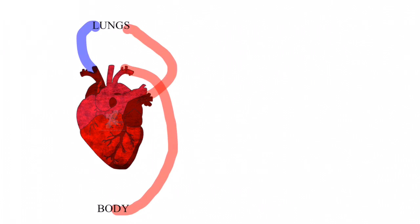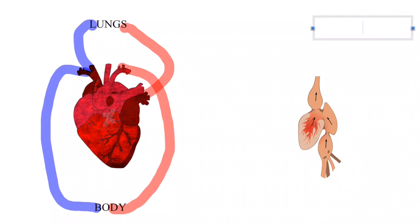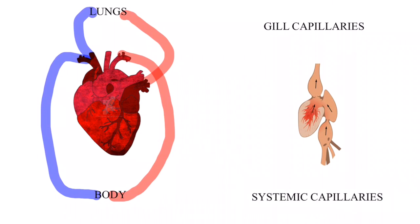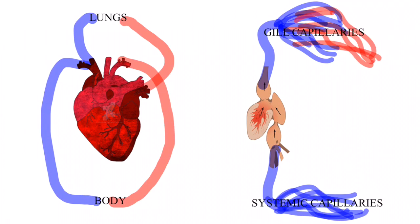Most mammals have a double circulatory system. A double circulatory system is different from a single circulatory system because it has two loops in our body which carry blood, whereas a single only has one.